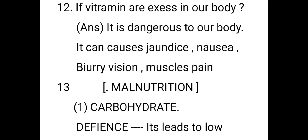Blurred vision means when the lens of the eye is not functioning properly. The ciliary muscles adjust the lens and retina, and when the lens is damaged or scratched, it causes blurred vision when reading or writing. Muscle pain also results from excess vitamins.